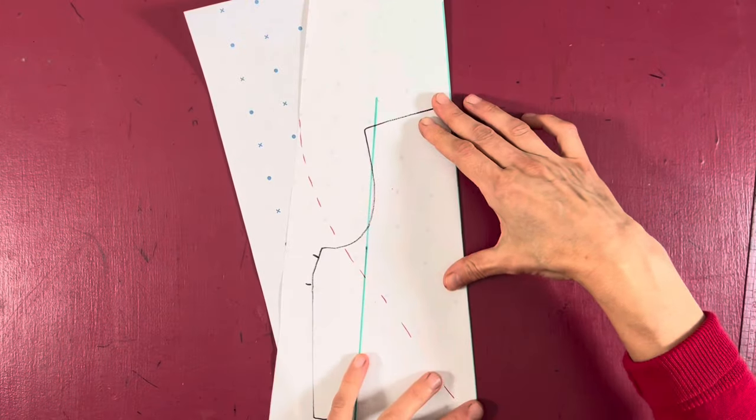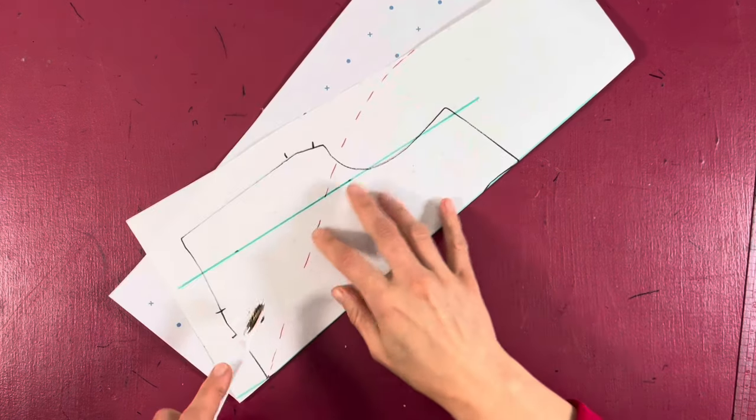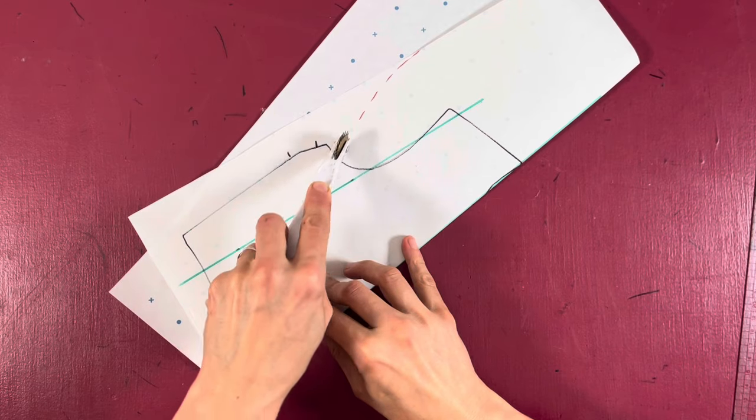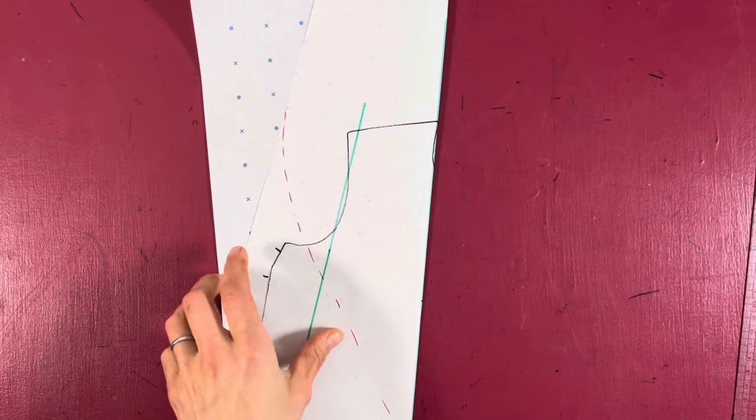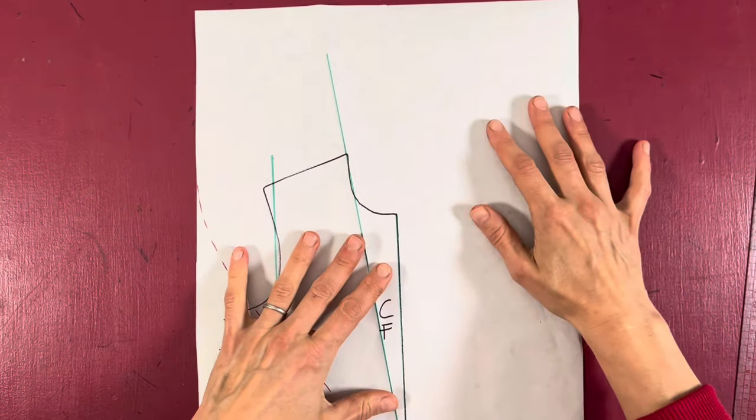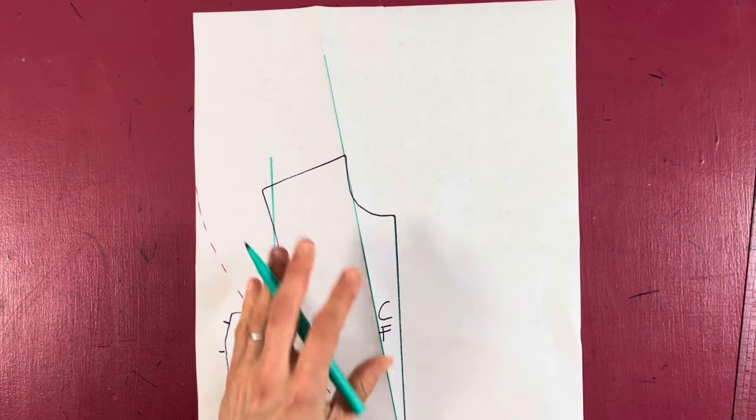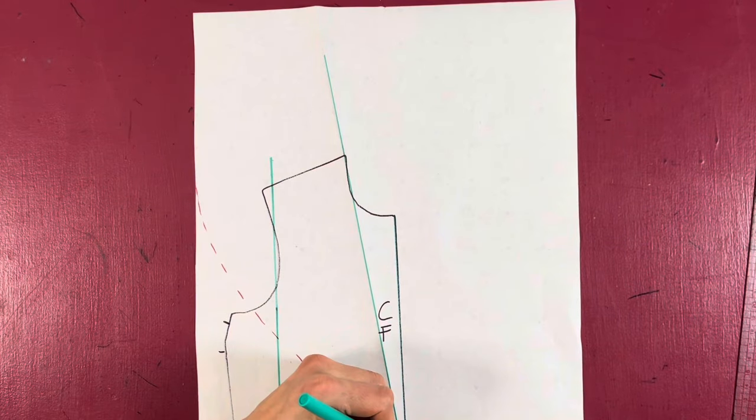I'm going to do it like this, and then I'm going to trace it through. And the reason I'm doing it like this is because sometimes it's quite hard when you draw on your body,